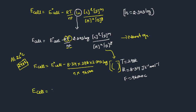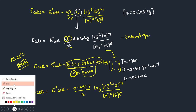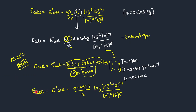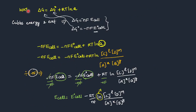E_cell = E°_cell minus 0.0591 divided by N, times log([C]^l[D]^m / [A]^x[B]^y). Mostly we will use room temperature in the final equation — this is the Nernst equation. So to summarize the steps: first we write the electrochemical equation, then write Q as products over reactants, then use ΔG = ΔG° + RT·lnQ, substitute ΔG = -nFE_cell and ΔG° = -nFE°_cell, and derive the Nernst equation.